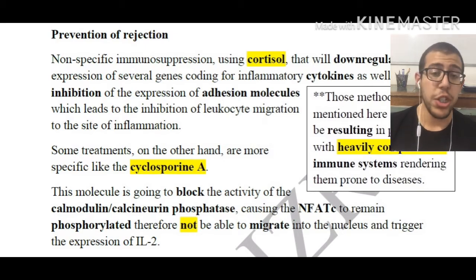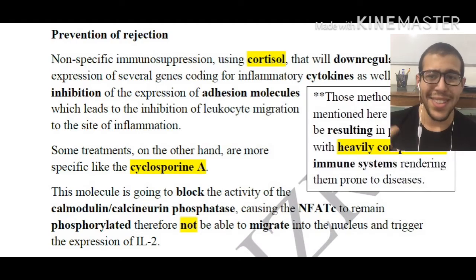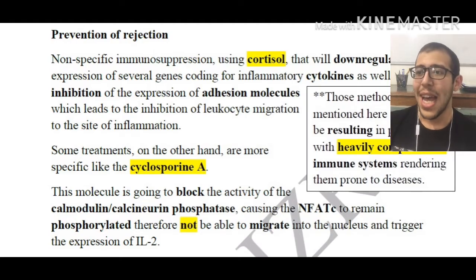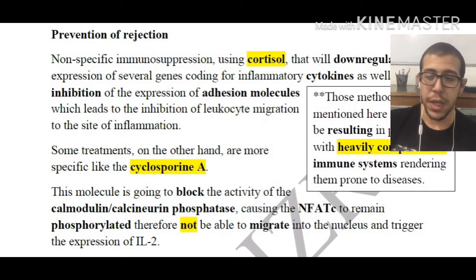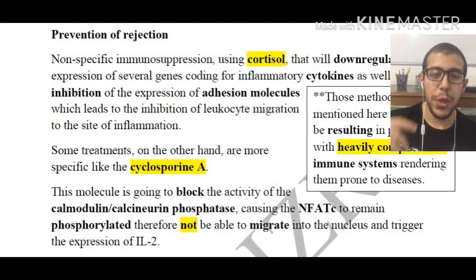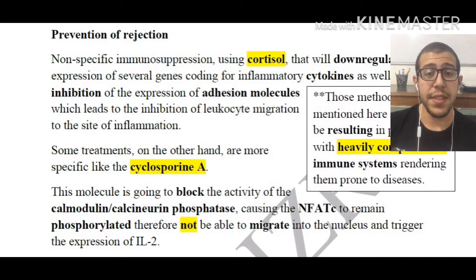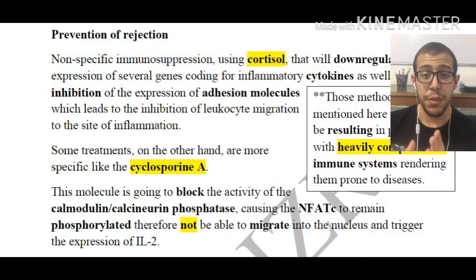The non-specific immunosuppression using cortisol will down-regulate the expression of several genes coding for inflammatory cytokines, as well as inhibiting the expression of adhesion molecules, which leads to the eventual inhibition of leukocyte migration to the site of inflammation. Leukocytes are also going to be releasing cytokines, so inhibiting this will also prevent or decrease the levels of rejection.